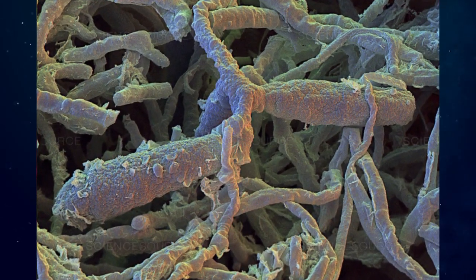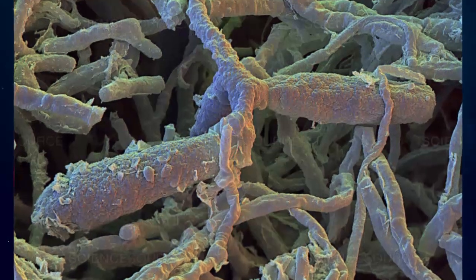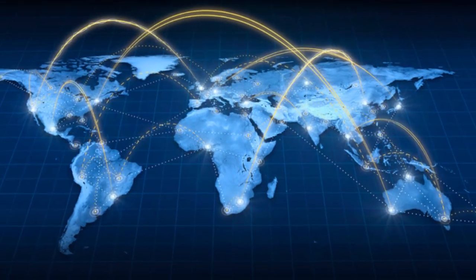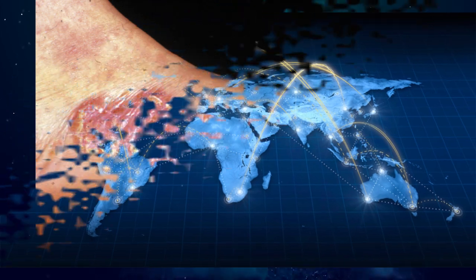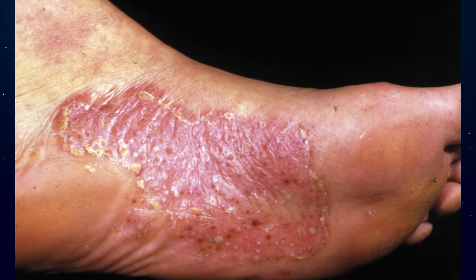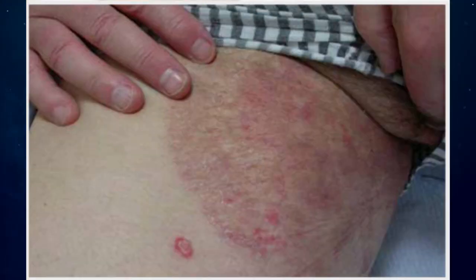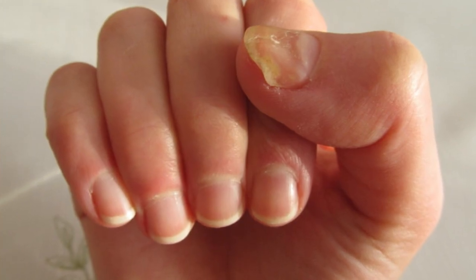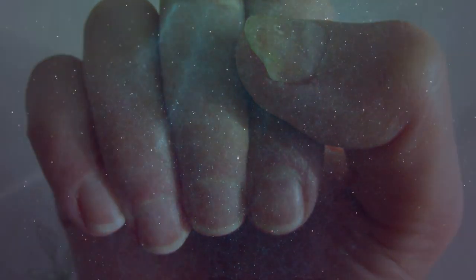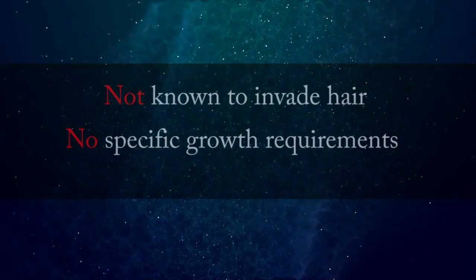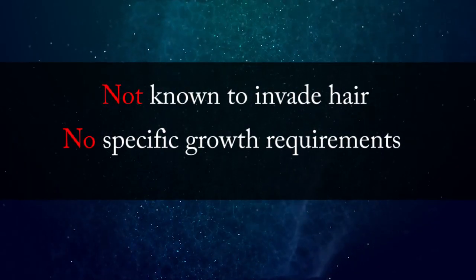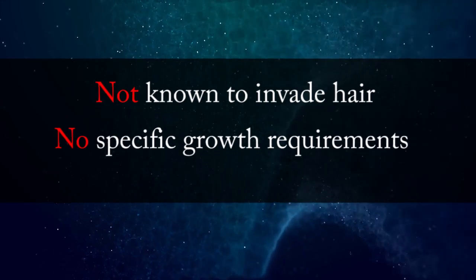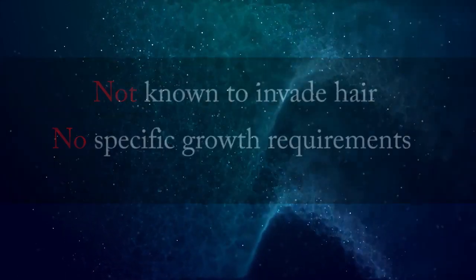Epidermophyton floccosum is an anthropophilic dermatophyte with a worldwide distribution, which often causes tinea pedis, tinea cruris, tinea corporis, and onychomycosis. It is not known to invade hair in vivo, and no specific growth requirements have been reported.